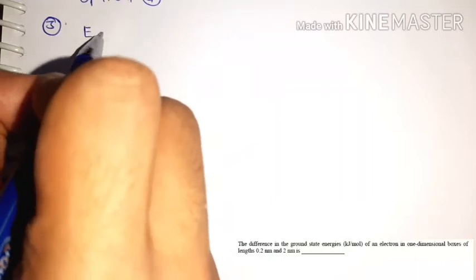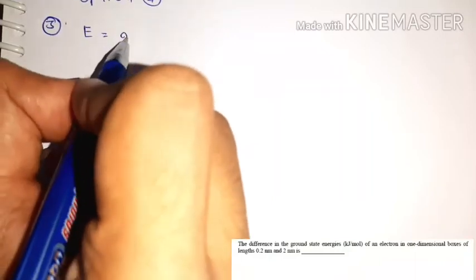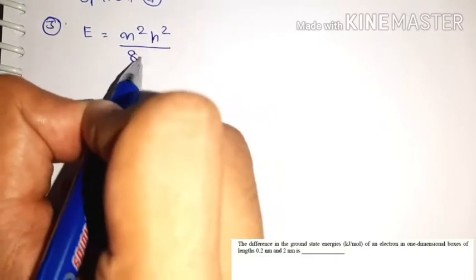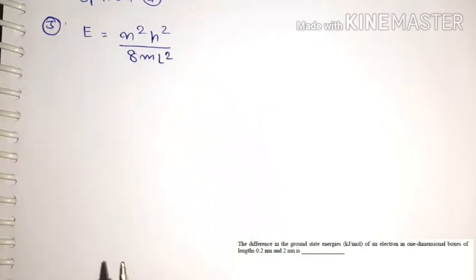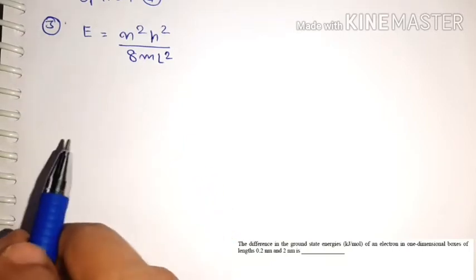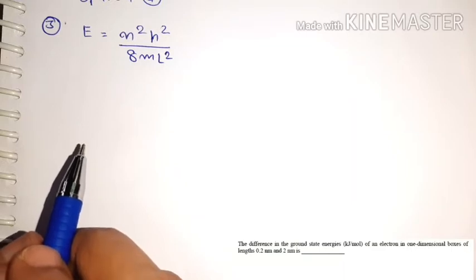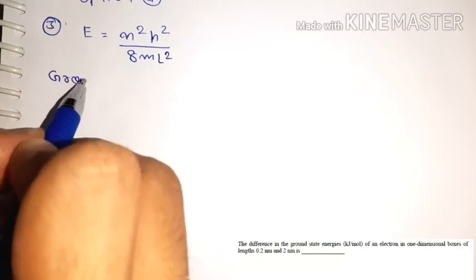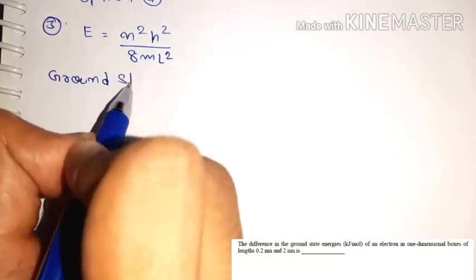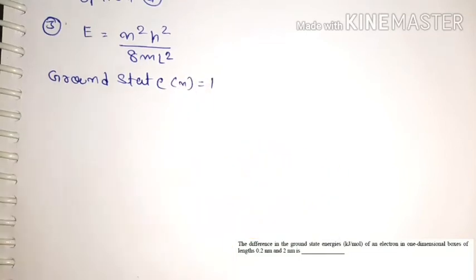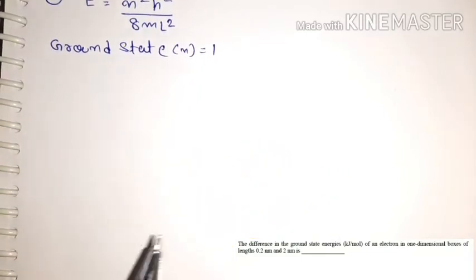The energy formula for a 1D box is: E = n²h² / 8mL². For ground state energy, the value of n is 1.